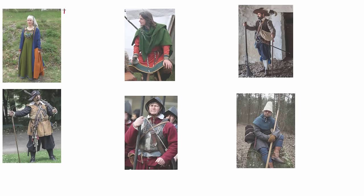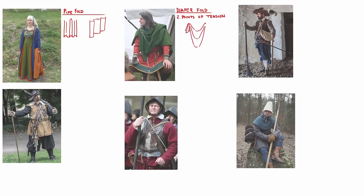Now let's see some examples of these folds in a few real-life images. Here on this woman's dress, we again see the familiar pipe fold — take note of that alternating half-cylinder motif. Here on this shoulder wrap, we see the diaper fold indicative of two points of tension. You can clearly see that the slope of each of these U-shaped motifs increases as we descend further from the points of tension.